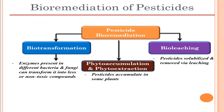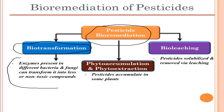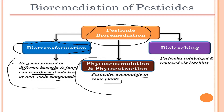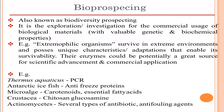Pesticide biodegradation into useful substances occurs through three main steps. First is biotransformation, where enzymes present in different bacteria and fungi transform pesticides into less toxic or non-toxic compounds. Second is phytoaccumulation or phytoextraction, which involves pesticide accumulation in certain plants. Third is bioleaching, where pesticides are solubilized and removed via leaching.